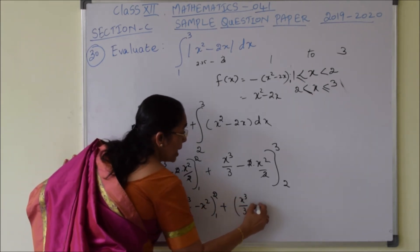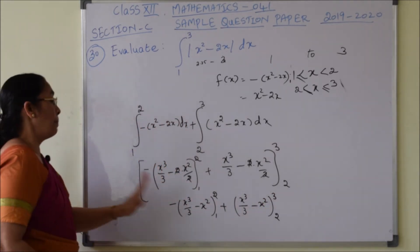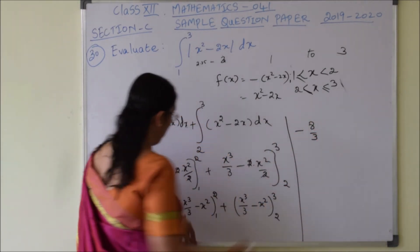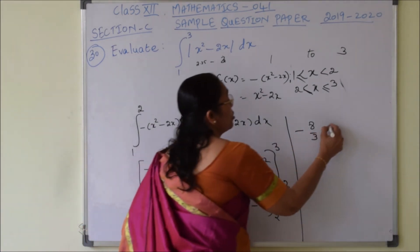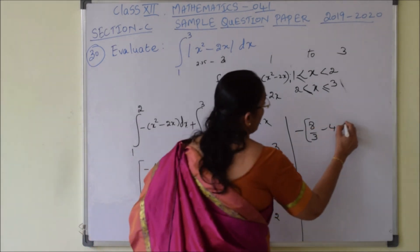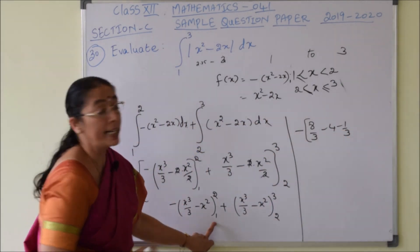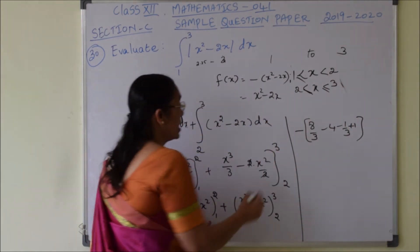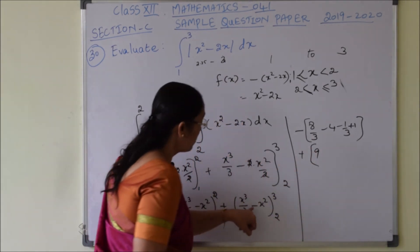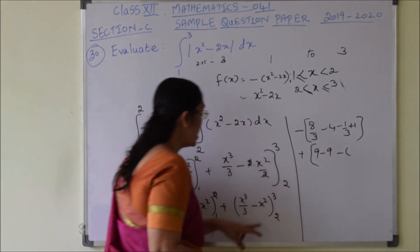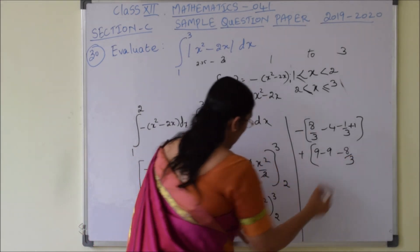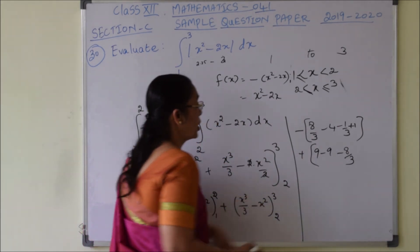Plus (x cubed over 3 minus x squared) from 2 to 3. Applying the limits for the first part: upper limit gives 8 over 3 minus 4; lower limit gives 1 over 3 minus 1. For the second part: upper limit gives 27 over 3 minus 9 (i.e., 9 minus 9); lower limit gives 8 over 3 minus 4, so minus 8 over 3 plus 4.